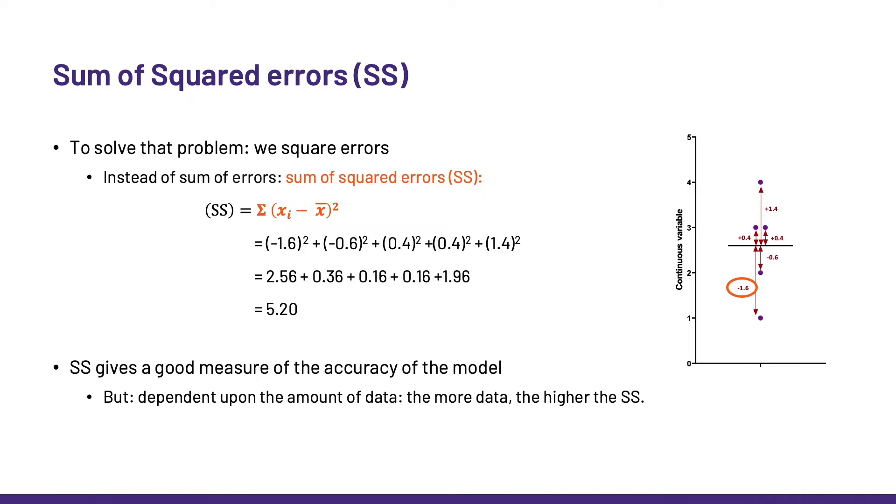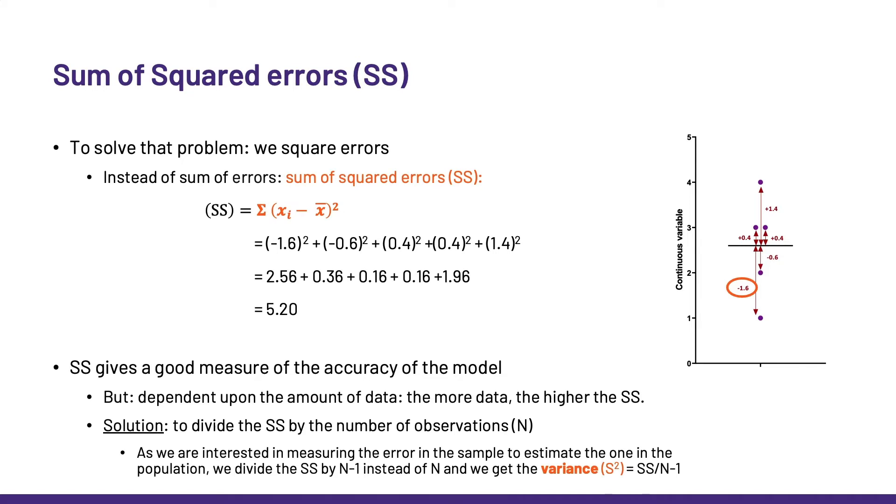Now, the sum of squares is a good measure of the accuracy of the model, but it is dependent upon the amount of data. The more data, the higher the sum of squares. So, that's not very useful when we are looking at samples with different sizes. One way to fix that problem is to divide the sum of squares by the number of observations. Well, close enough. As we are interested in measuring the error in the sample to estimate the one in the population, we actually divide the sum of squares by n minus 1 instead of n, and we get the variance.